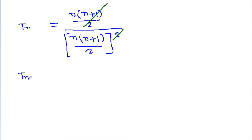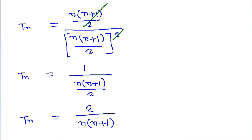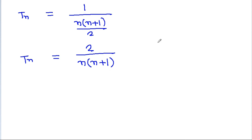So Tn is equal to n(n+1)/2 divided by [n(n+1)/2]², which simplifies to Tn = 2/(n(n+1)).